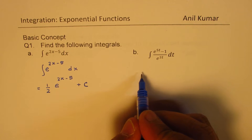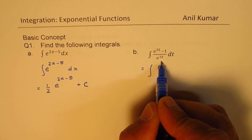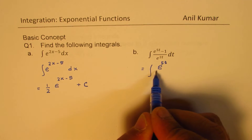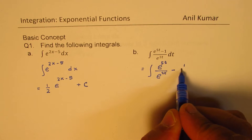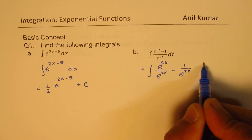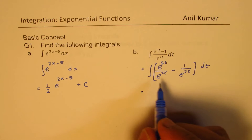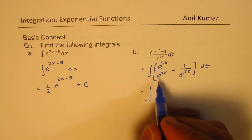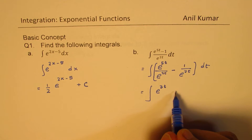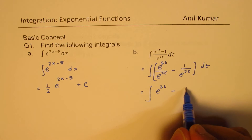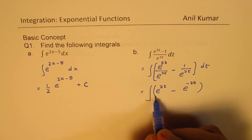In the second case, we can write the integral as e to the power of 5t over e to the power of 2t, minus 1 over e to the power of 2t, all dt. We can simplify this: e to the power of 5t minus 2t gives e to the power of 3t, minus e to the power of minus 2t, dt.